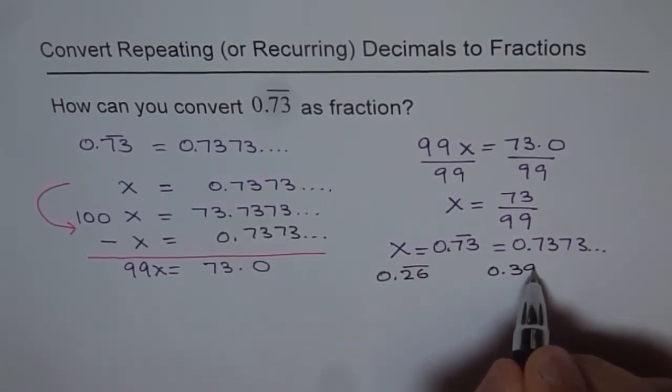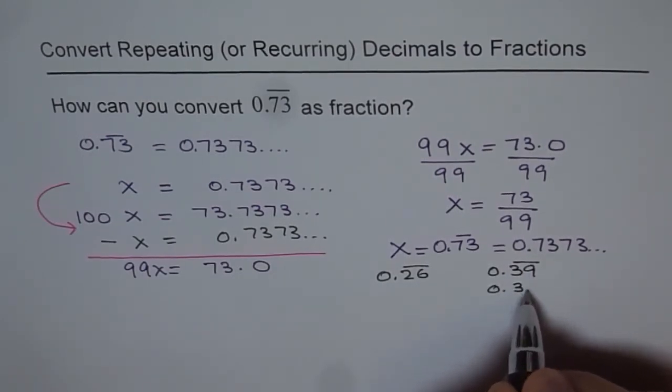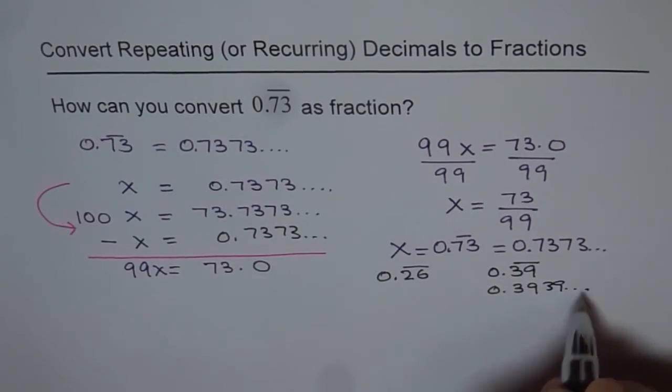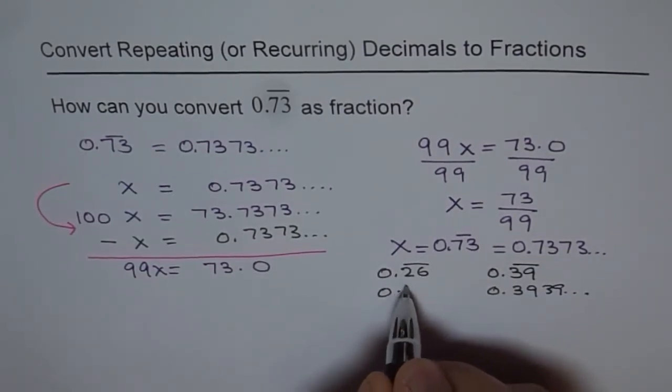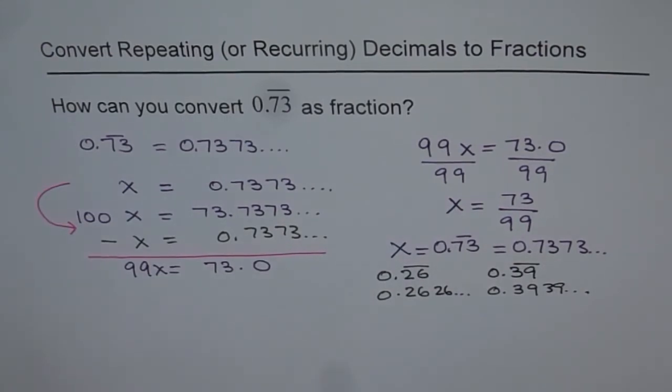How about 0.39 recurring? You understand this means 0.3939... and so on, and this is the same as 0.2626... and so on. Try it out. Okay, thank you.